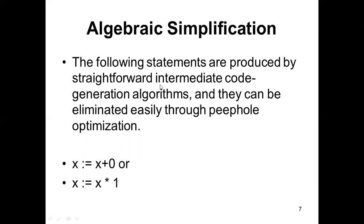Next we have algebraic simplifications. You already know how to perform these. For example: x = x + 0 — whenever you add zero to any value you get x. And x = x * 1 — multiplying by one gives x. So during the optimization process, expressions like x = x + 0 and x = x * 1 will be eliminated.